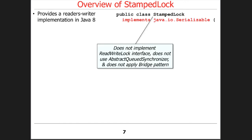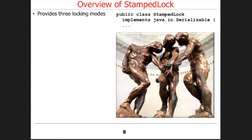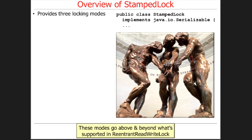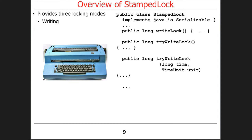You have a class called StampedLock. This doesn't implement anything else — it doesn't implement the ReadWriteLock interface, doesn't use the AbstractQueuedSynchronizer, doesn't apply the bridge pattern. It's just really stripped down and super fast. There are three locking modes in StampedLock, and these modes go way above and beyond what's in ReadWriteLock. We're not even going to talk about ReadWriteLock in class — it's just so limited that it's pointless. There's a video available if you're curious, but focus on StampedLock.